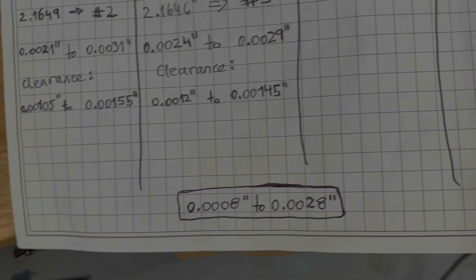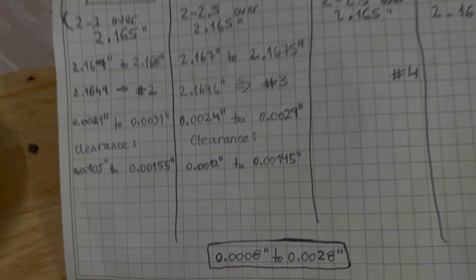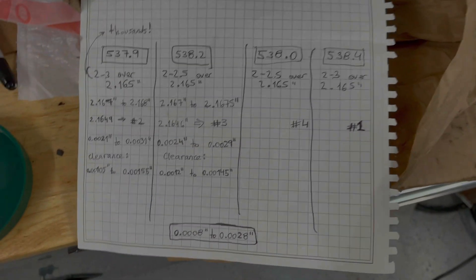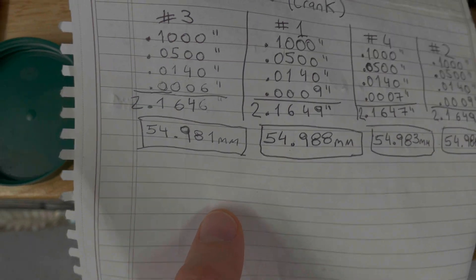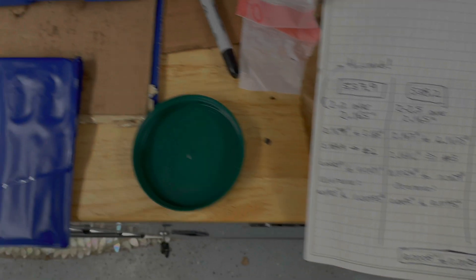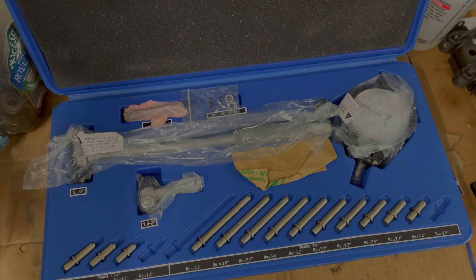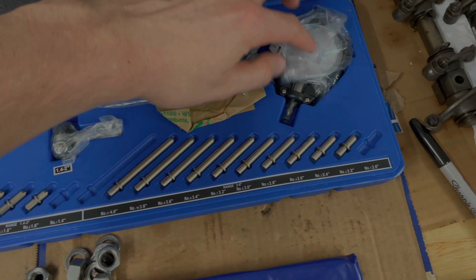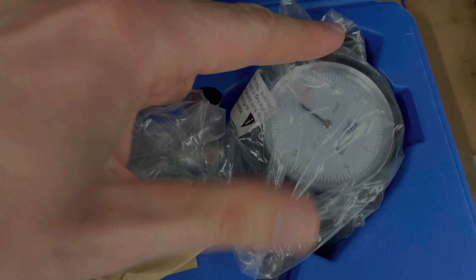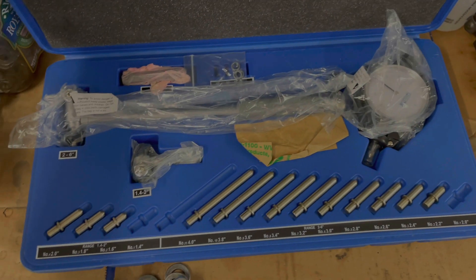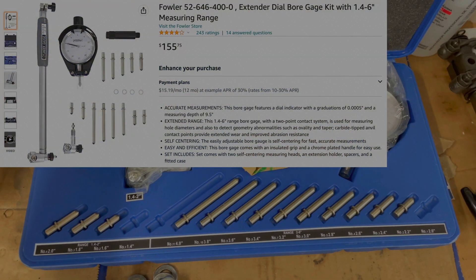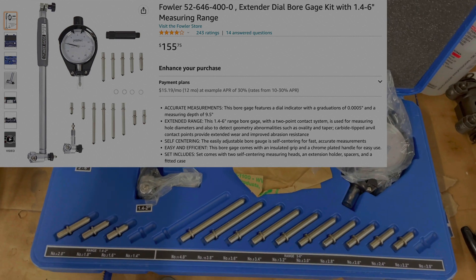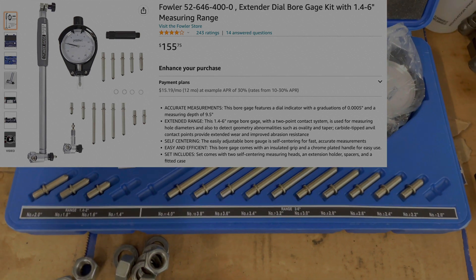I wish I could have done all this in millimeters. That's how it started, converting to millimeters, but then every tool you buy here is in inches unless you want to pay a lot more. I got this Fowler micrometer for $104. I could have bought the Chinese one for half.